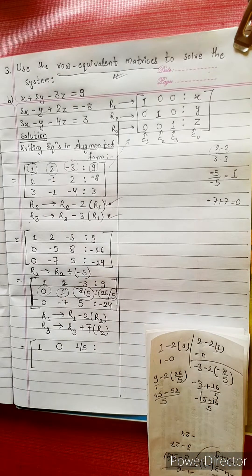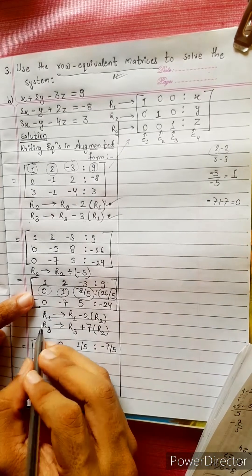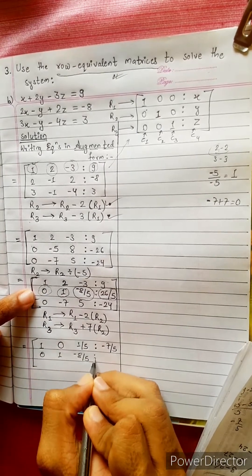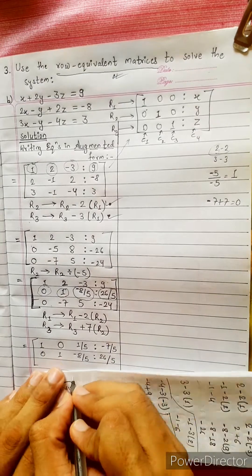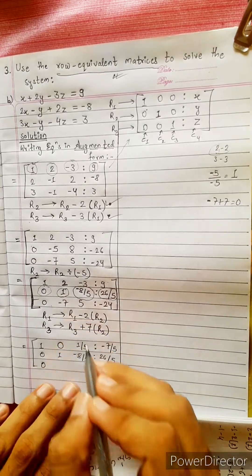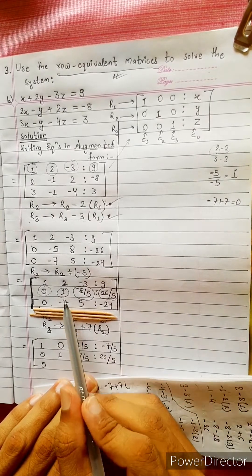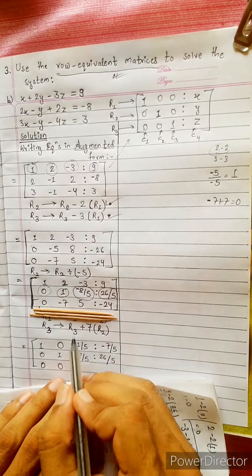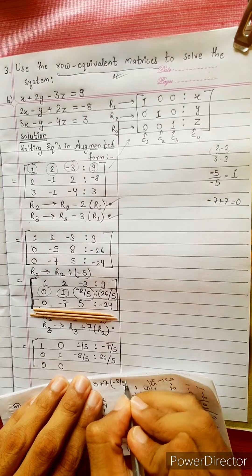Now we have to do this. 7 equals minus 7 by 5. Now we have minus 7 by 5. So R2 equals 0. 6 minus 8 by 5 is 26 by 5. Then 0 0 plus 7 times R2. 5 plus 7 times R2, R2 minus 8 by 5.